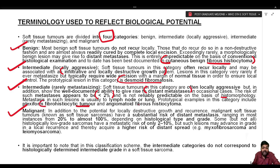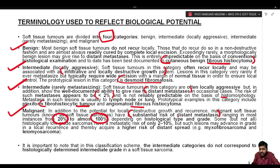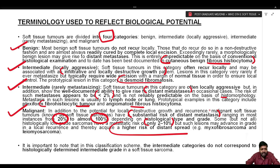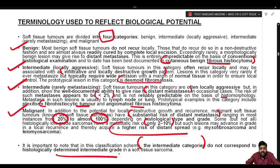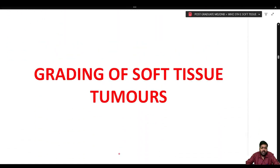Malignant soft tissue tumors (soft tissue sarcomas) have a substantial risk of distant metastasis ranging from 20 percent to almost 100 percent, depending on histological type and grade. Some histologically low-grade sarcomas have a metastatic risk of only 2 to 10 percent, but may advance in grade upon local recurrence — for example, myxofibrosarcoma and leiomyosarcoma. Importantly, the intermediate categories do not correspond to histologically determined intermediate grade in a soft tissue sarcoma.